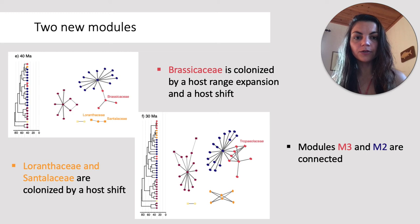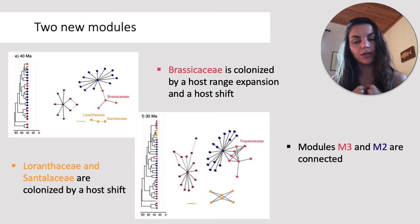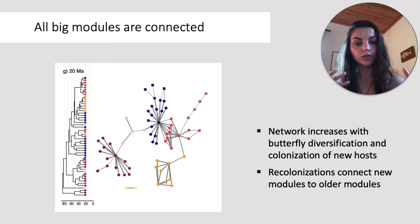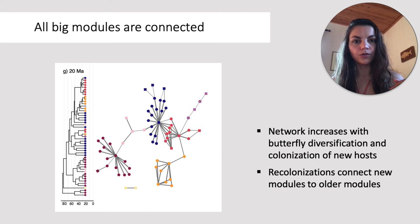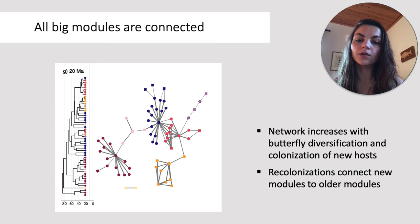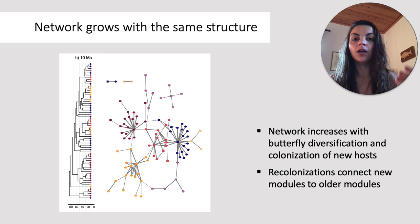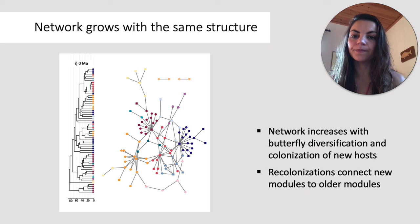At 40 million years ago, Lauraceae and Santalaceae were colonized by a host shift from Capparaceae, forming Module 4 — the yellow one. Two lineages colonized Brassicaceae: one by a host shift from Capparaceae, and another by a host range expansion. Because most species in Module 3, the Brassicaceae module, retained Capparaceae as a host, modules M3 and M2 stayed connected. At 20 million years ago, the overall network structure changed: recolonization of ancestral hosts connected new modules to older modules, transforming the fragmented network into a connected network where almost everyone is connected directly or indirectly.